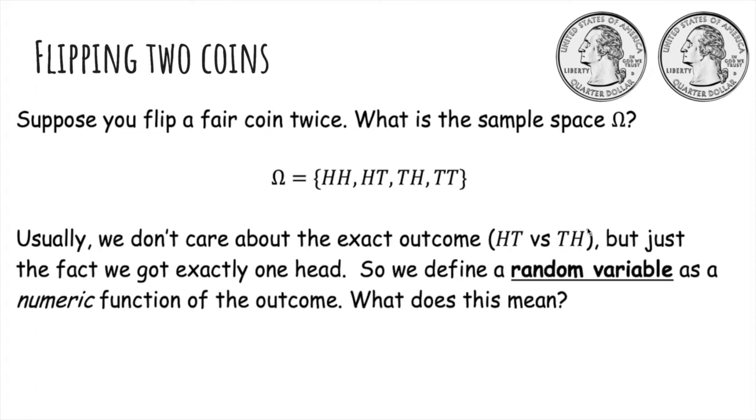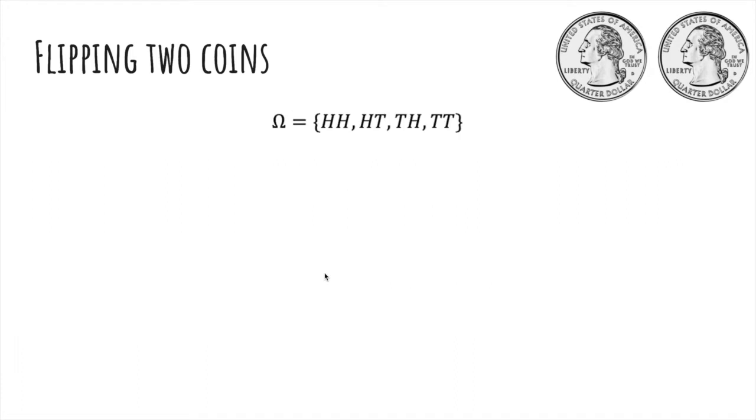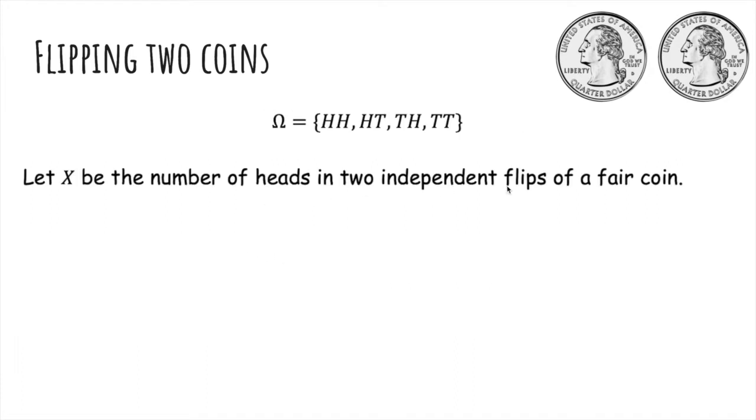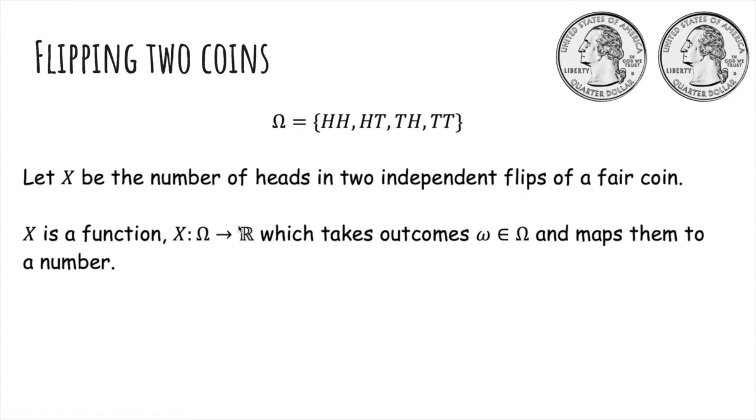So a random variable is defined to be a numeric function of the outcome. Let X be the number of heads in two independent flips of a fair coin. Then X is a function which takes outcomes in omega and maps them to a number.